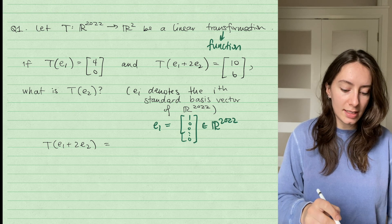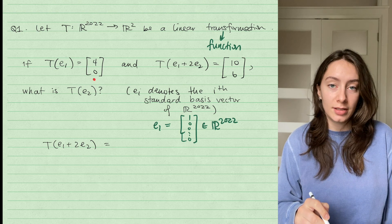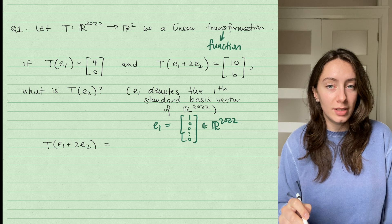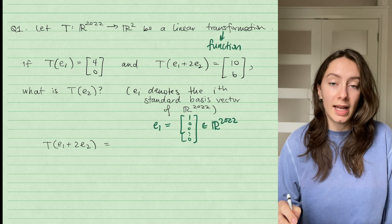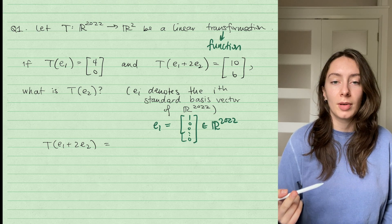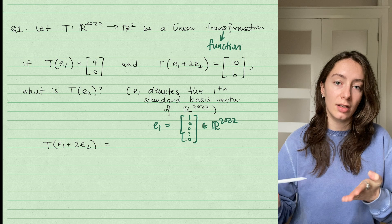So it's saying that T(E_1) gives you the two vector [4, 0], and also T(E_1 + 2E_2) gives you the vector [10, 6].